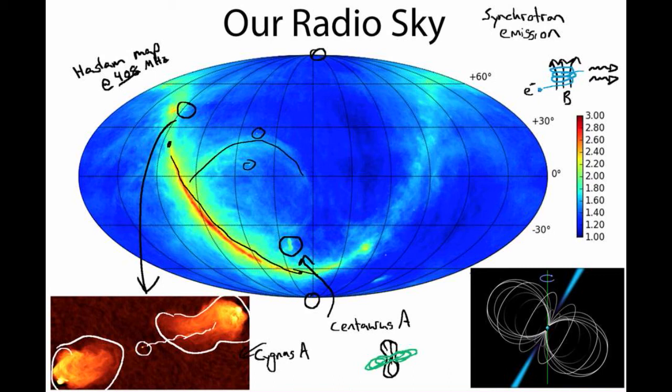Now another type of emission that we can see at radio wavelengths are things called pulsars. So over here is Vela. And Vela is very famous for having a pulsar, the Vela pulsar.